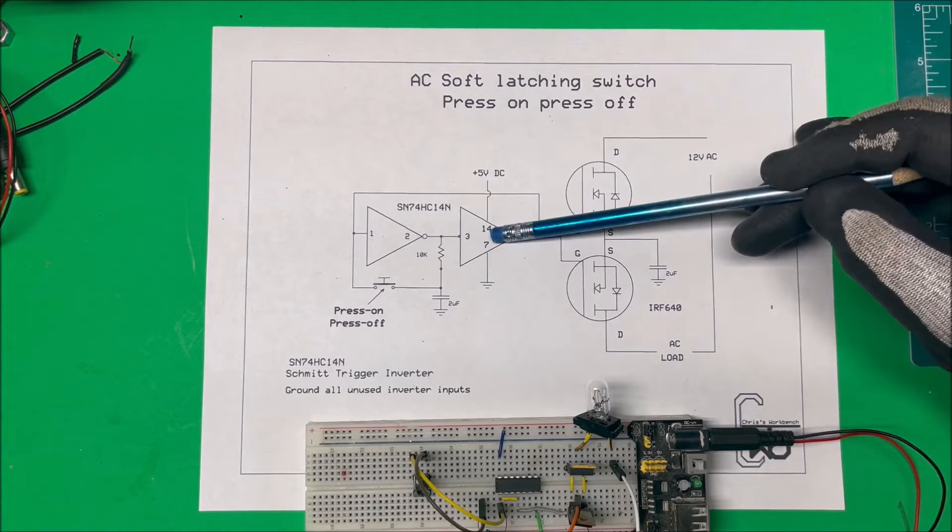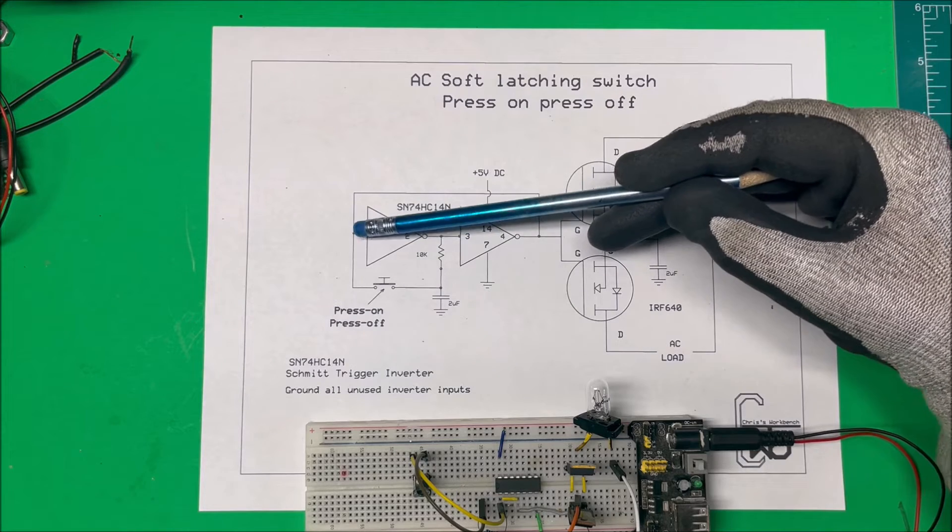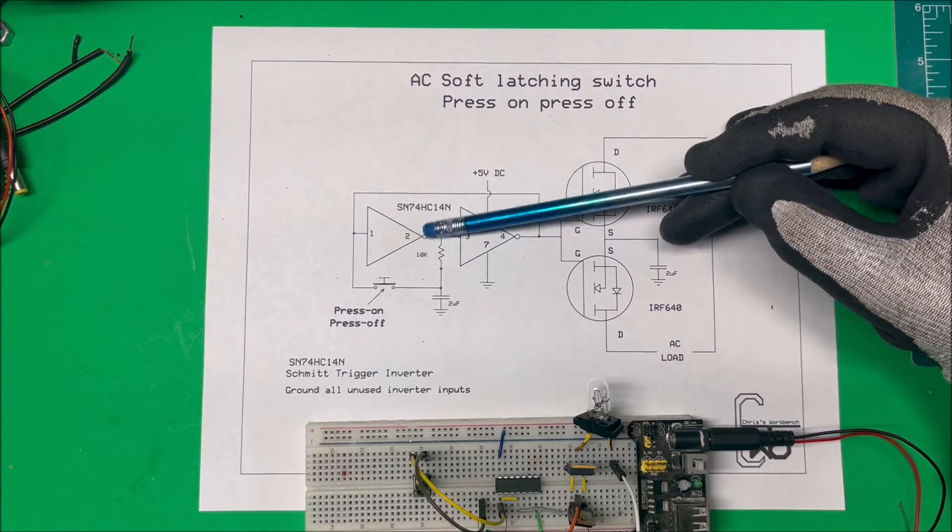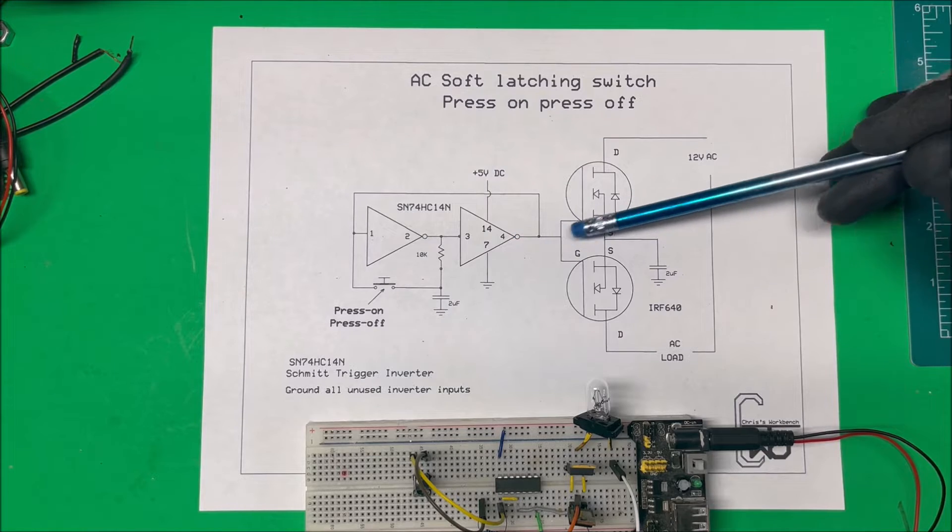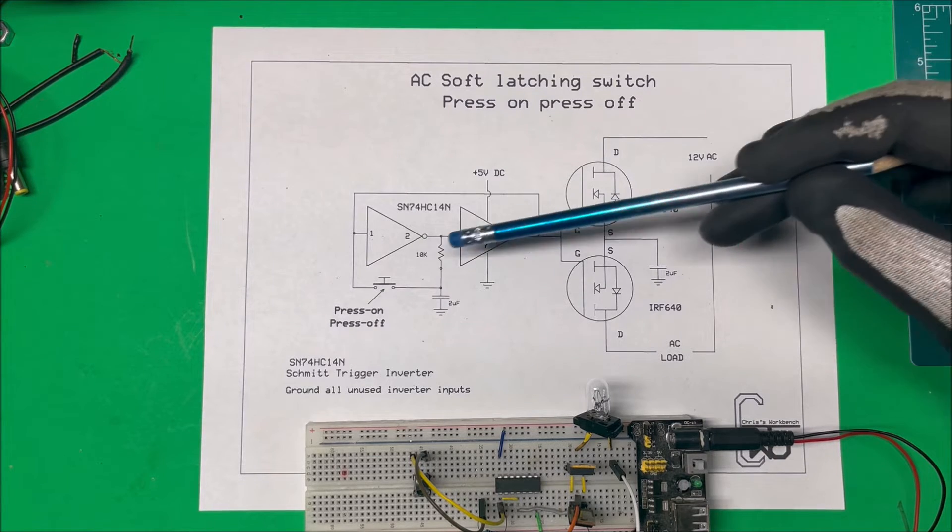What these inverters do is if you have zero volts here you're going to have five volts here. If you have five here you're going to have zero over here. The circuit's going to be off, but we have five volts on here and it's charging this capacitor through this 10k resistor.